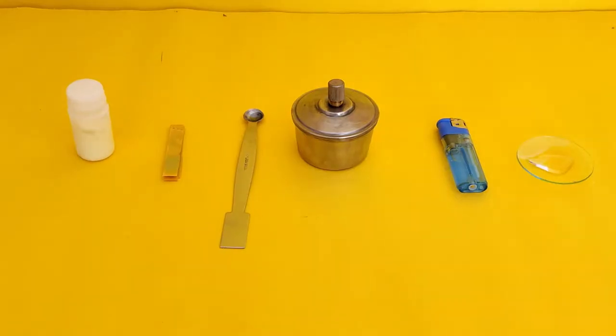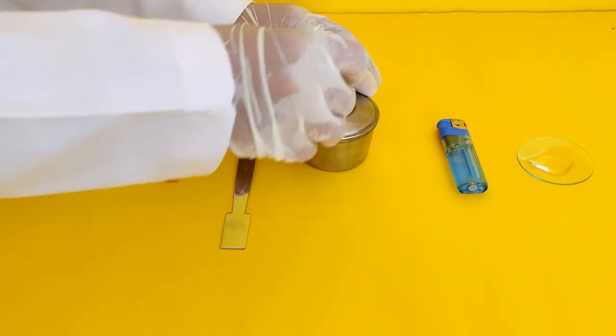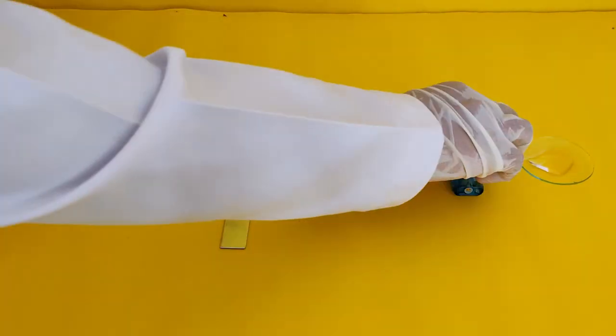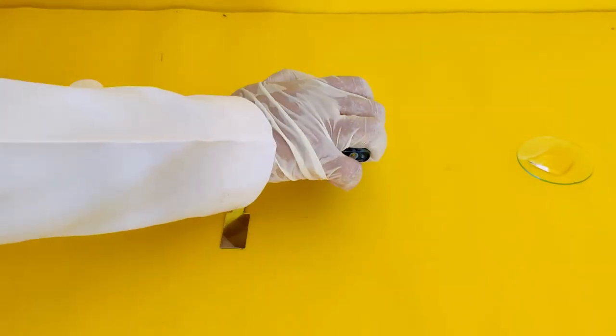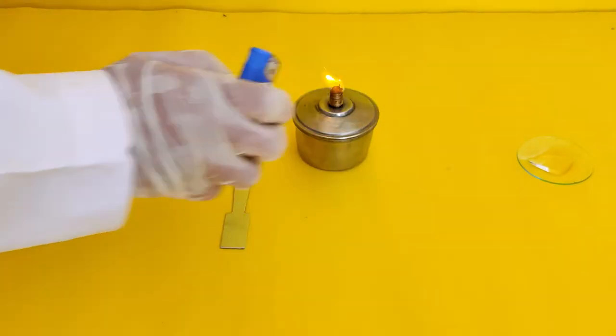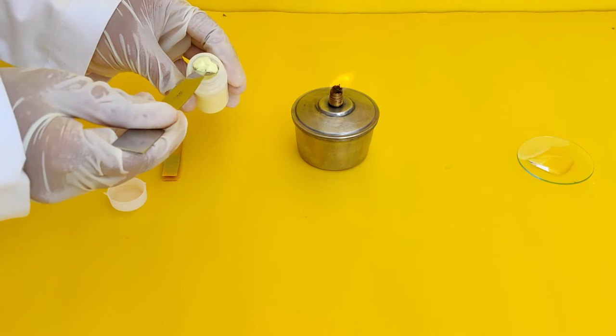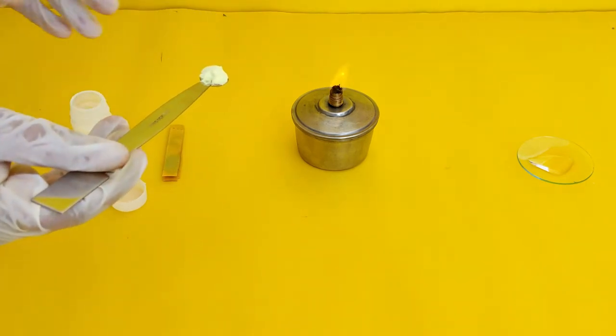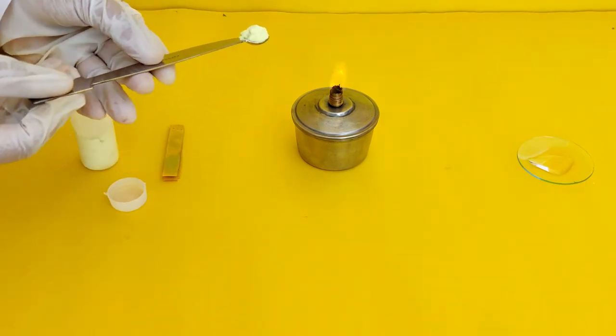To determine the pH of sulfur dioxide, we will heat some sulfur in a spatula. Light the spirit lamp. Take some sulfur in the spatula. Hold the spatula over the flame.